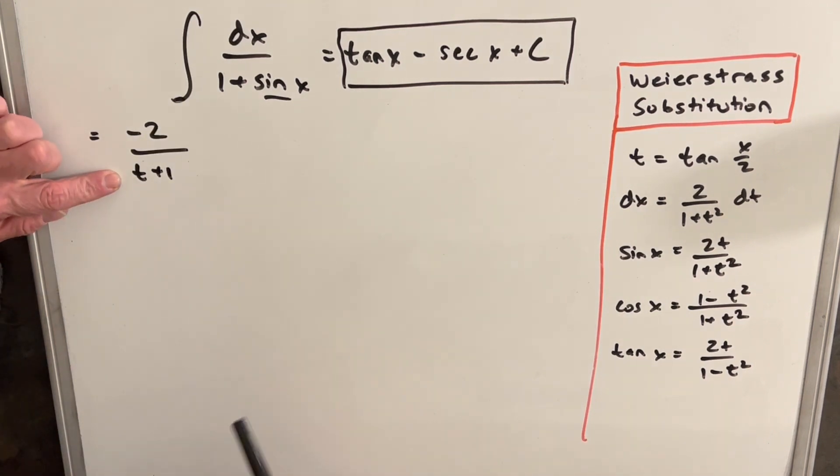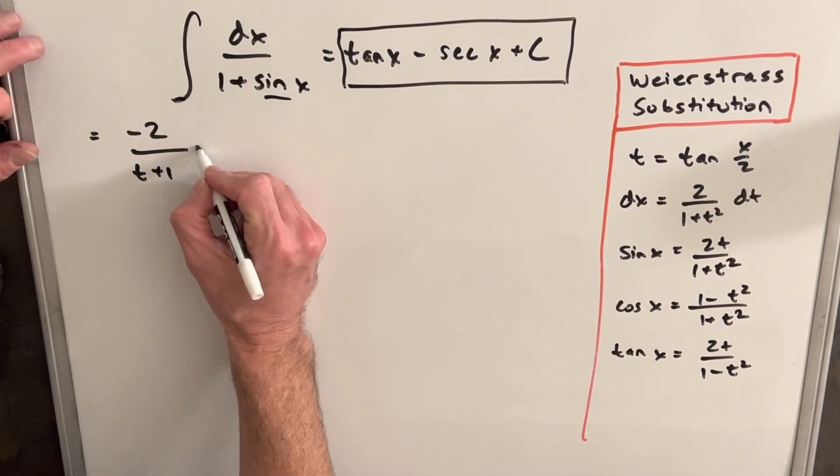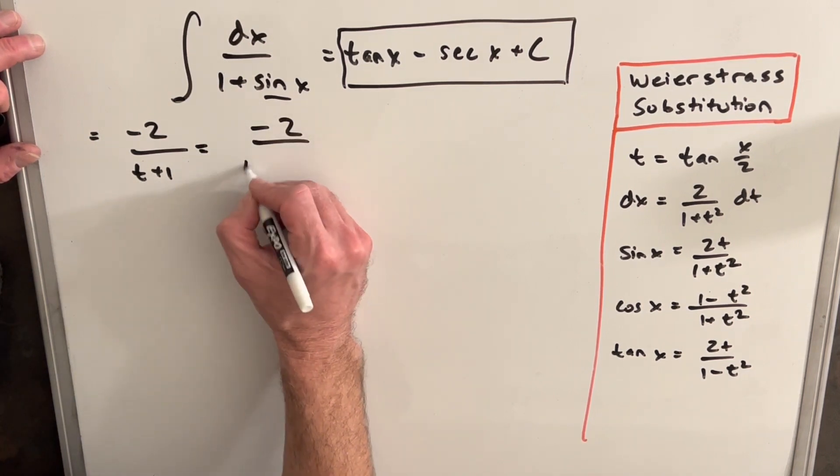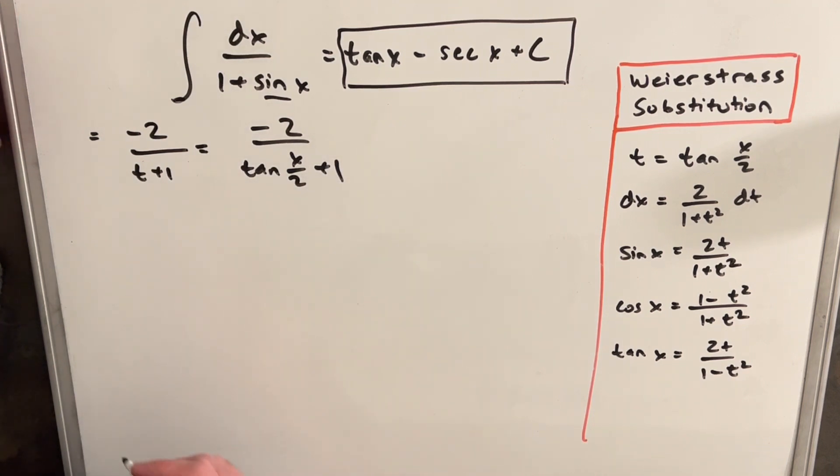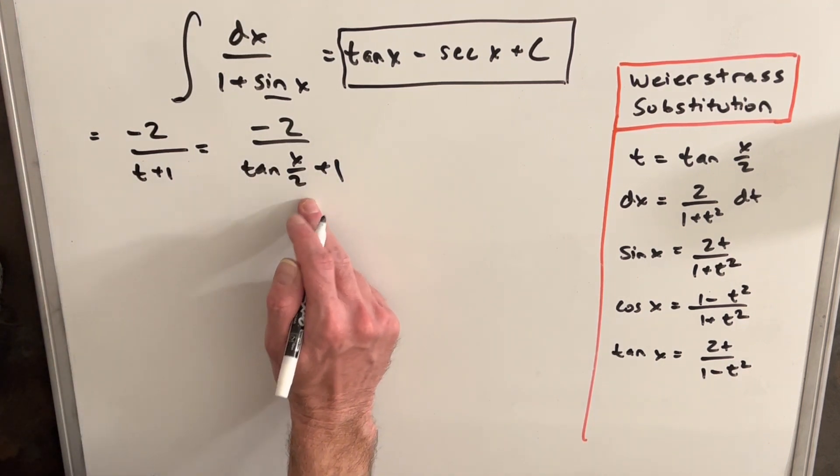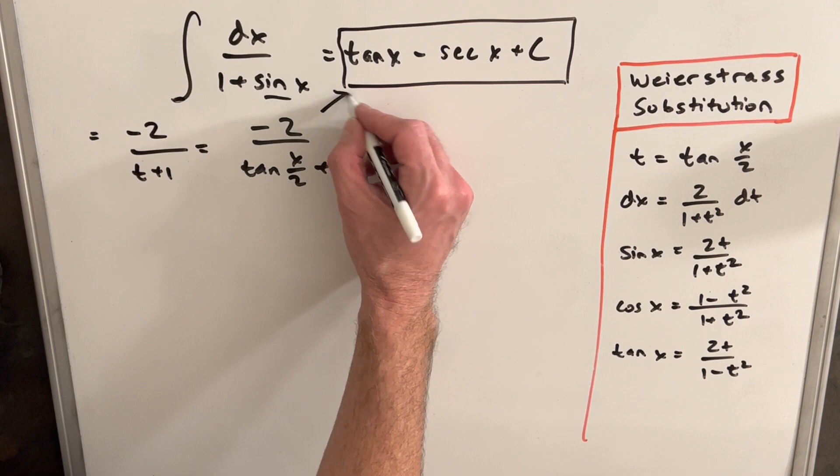But now we can back substitute, because we know what our t is. That was just our initial substitution. So we're going to have minus two over tan x over two plus one. And I'd say we're done, but the only problem is it looks nothing like this up here.